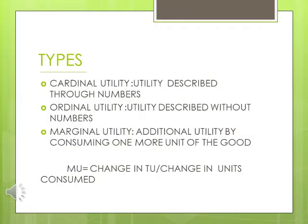Types of utility are: cardinal utility, which is described through numbers; ordinal utility, which is described without numbers; and marginal utility, which is the additional utility gained by consuming one more unit of the good. The equation for marginal utility is: marginal utility equals change in total utility divided by change in units consumed.